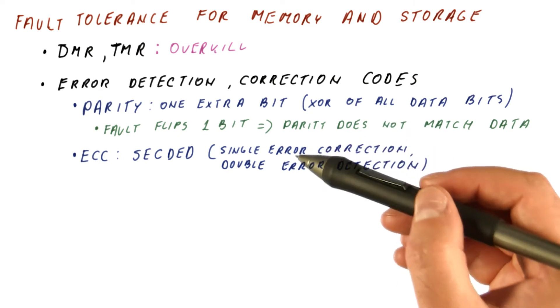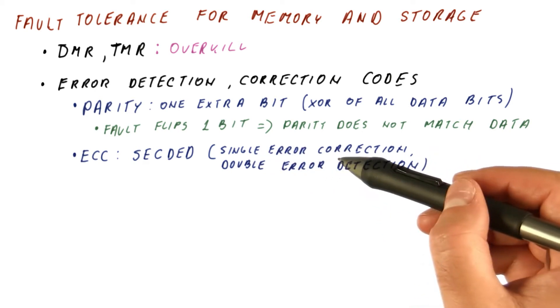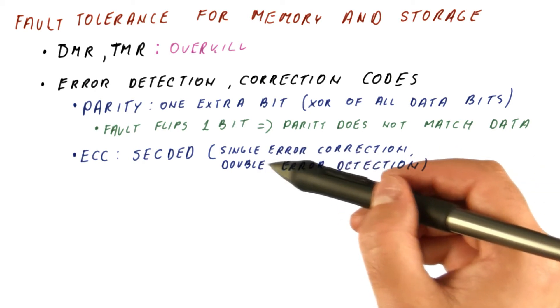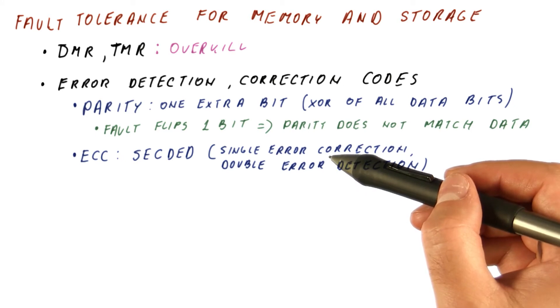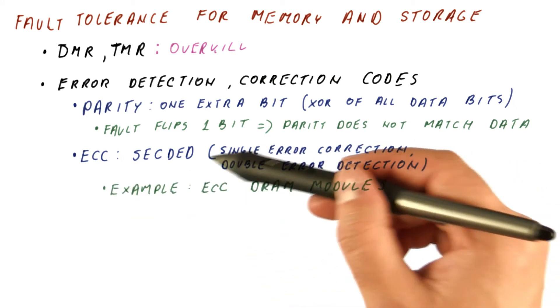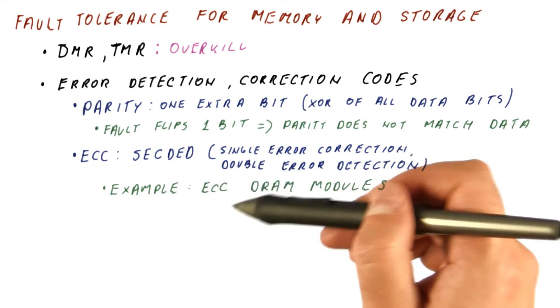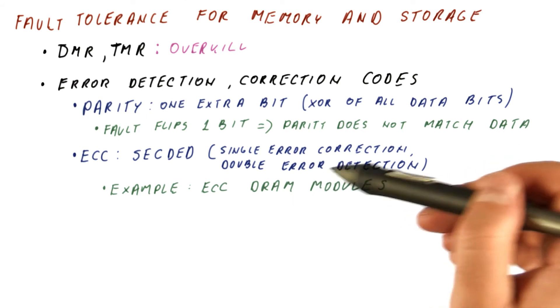This code can detect any one bit flip and actually fix it. Or if there are two bit flips, we will find out that happened, but we can no longer fix it using this code. An example of where this type of code is used is in DRAM modules that have ECC. This is how they are protected.